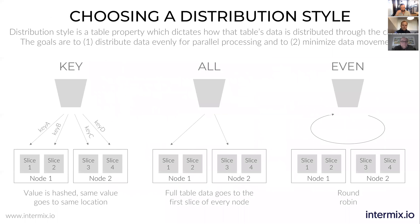Let's talk about skew and choosing a distribution style. Redshift is a columnar database, and it does a really good job of scanning very long tables and distributing your data across multiple nodes so that you can scale horizontally really easily. You have to select up front when you're defining a table the kind of distribution style that you want to use.